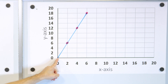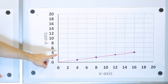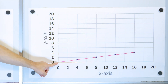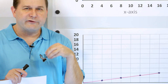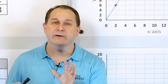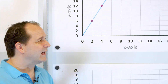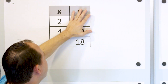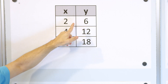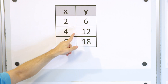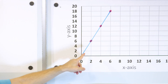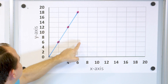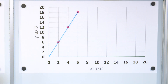That line also intersects the origin at (0, 0). Here's another example where the points form a straight line and intersect the origin. Let's look at the points forming this line: (2, 6), (4, 12), and (6, 18). Point (2, 6) is here, (4, 12) is here, and (6, 18) is there.